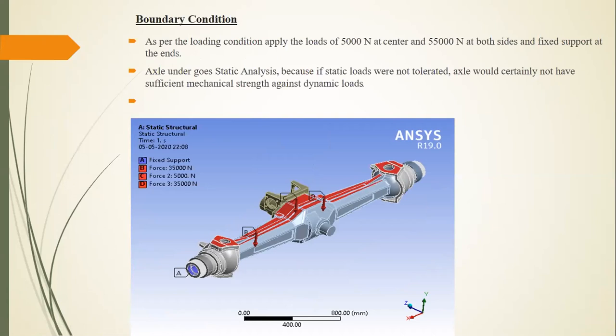For boundary conditions, a load of 55,000 Newton is applied on both sides of the axle beam. Additionally, 5,000 Newton is applied in the middle of the axle at the dome location to account for the dome weight and internal shaft components. Fixed supports are applied at the ends of the axle.